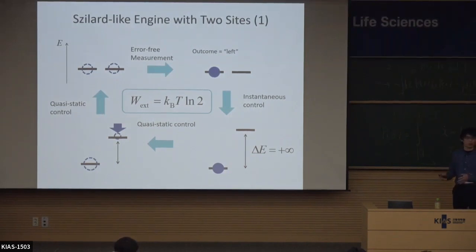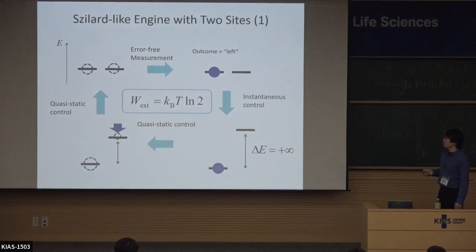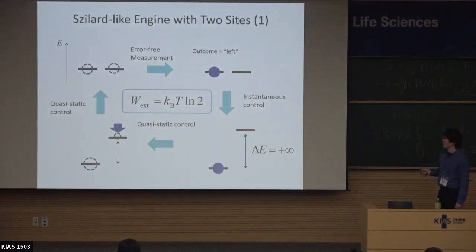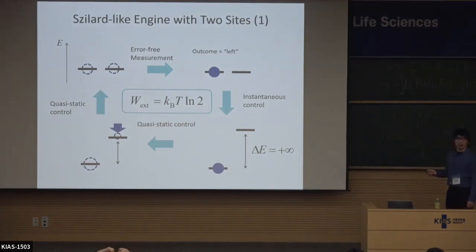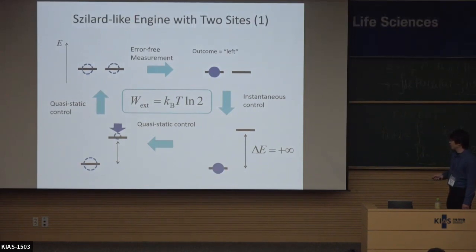The mathematical description of this type of system is more transparent than the particle model. We have two sites — left and right — and the particle just hops from left to right and right to left. These two sites have energy levels and we suppose that we can control those energy levels. In the initial state the particle is in the left or right with equal probabilities, that is just the symmetric equilibrium. Then the demon performs a measurement and if the particle is found in the left side, we can instantaneously push up the right energy level to infinity. This prohibits the particle from going back to the right side, analogous to the insertion of a wall.